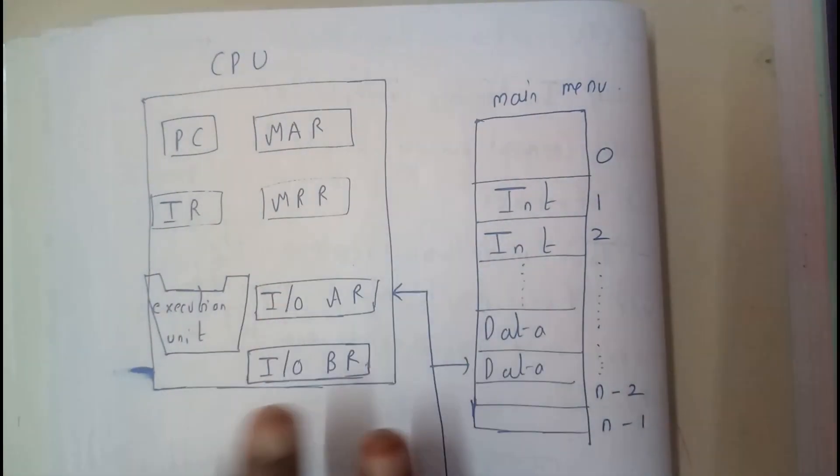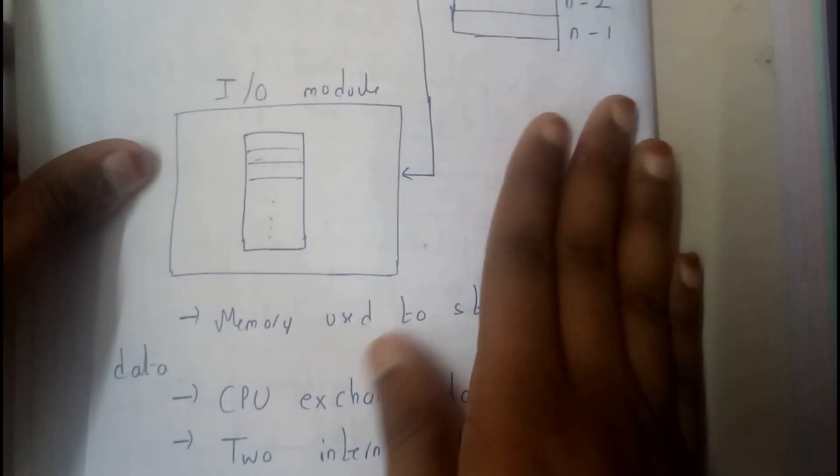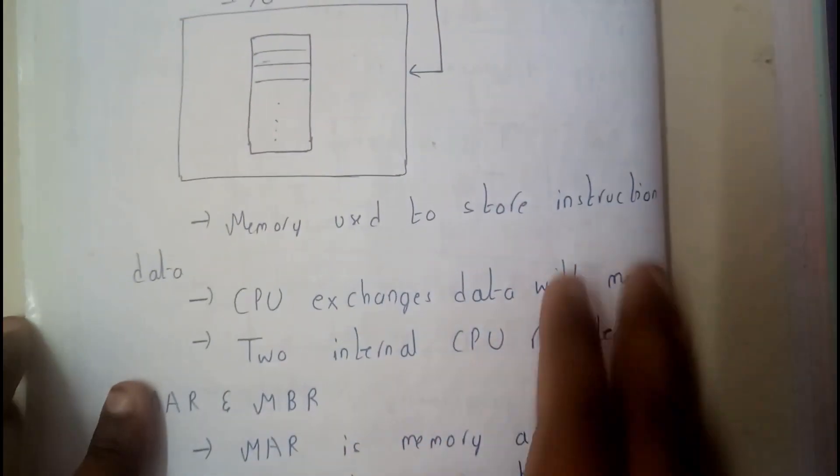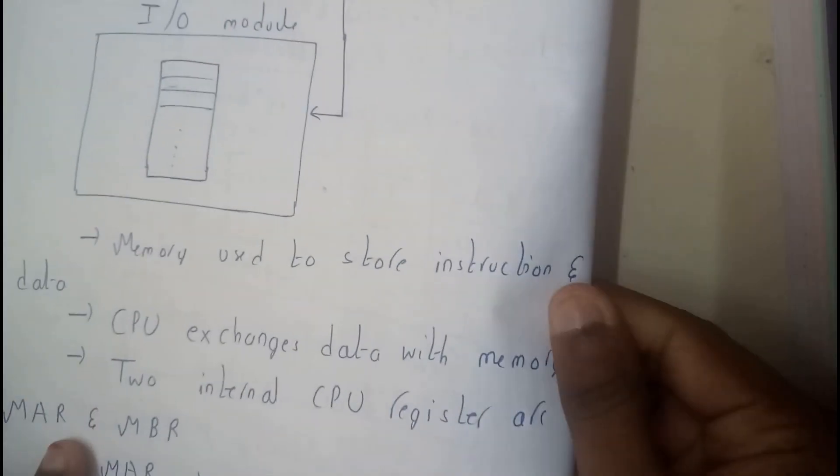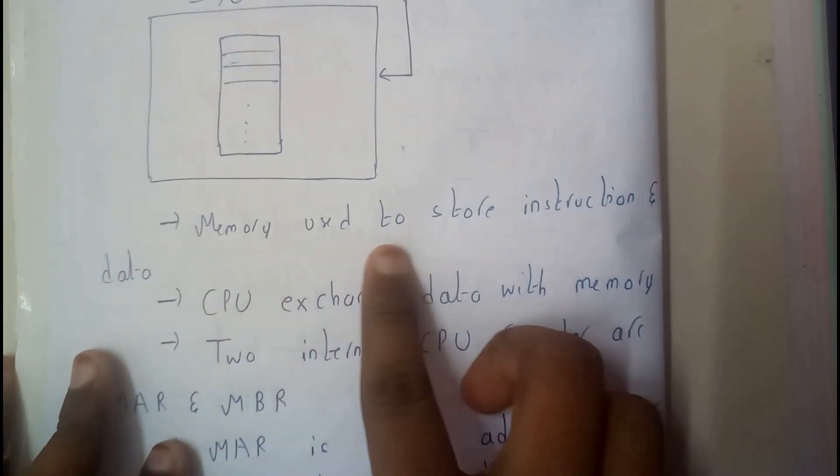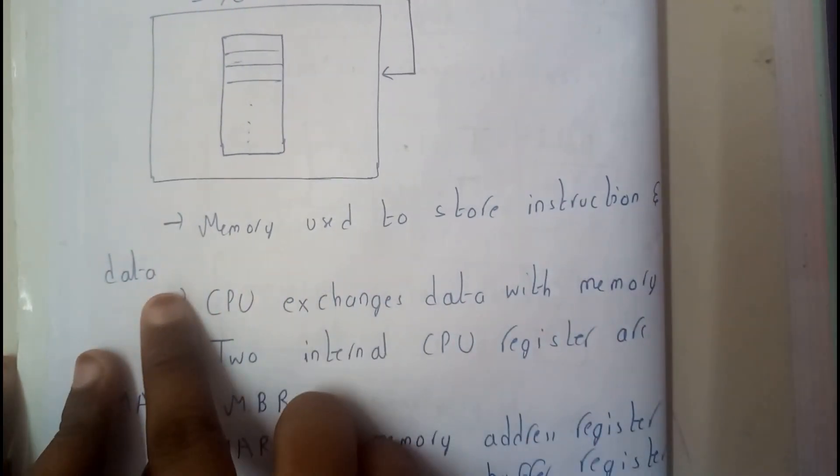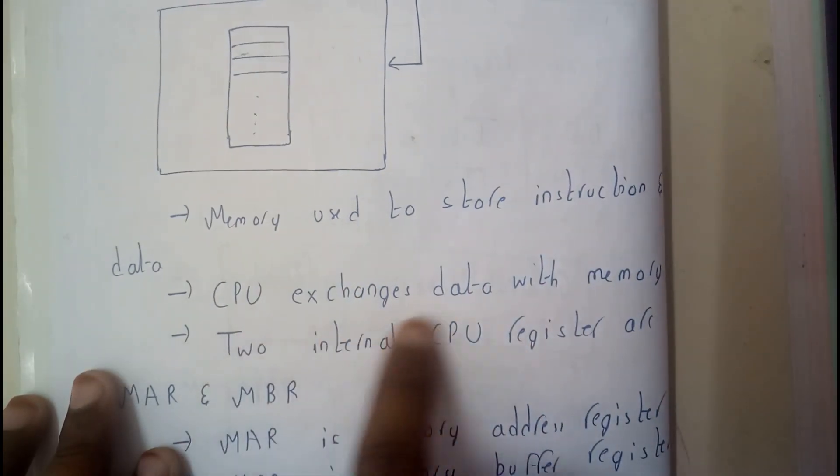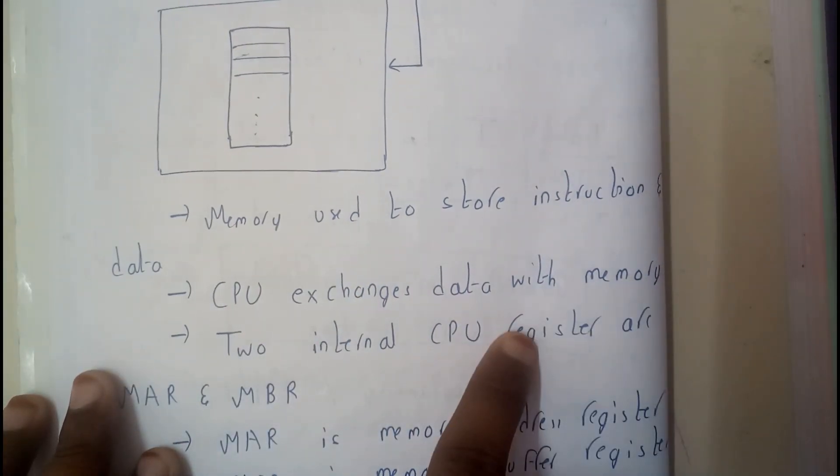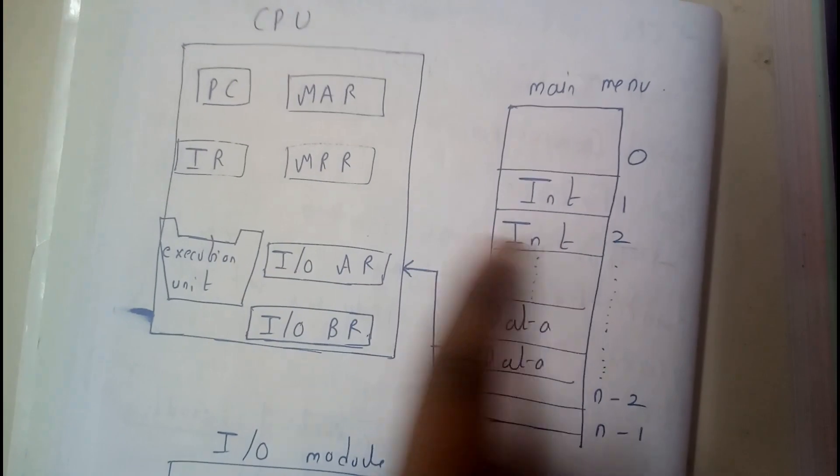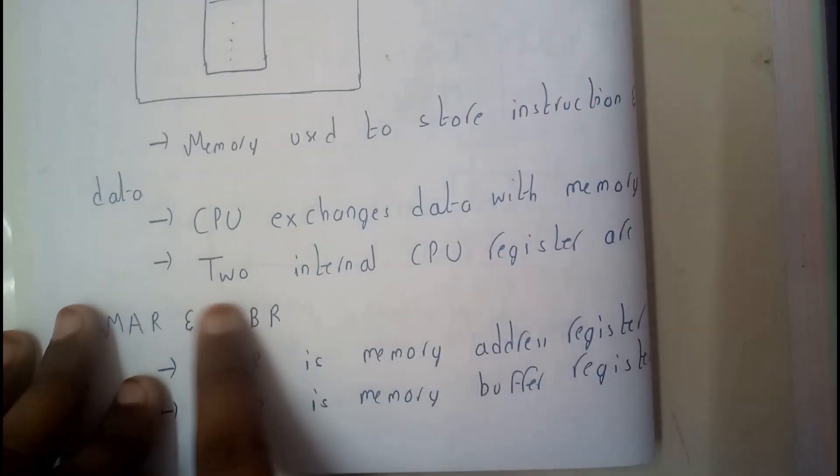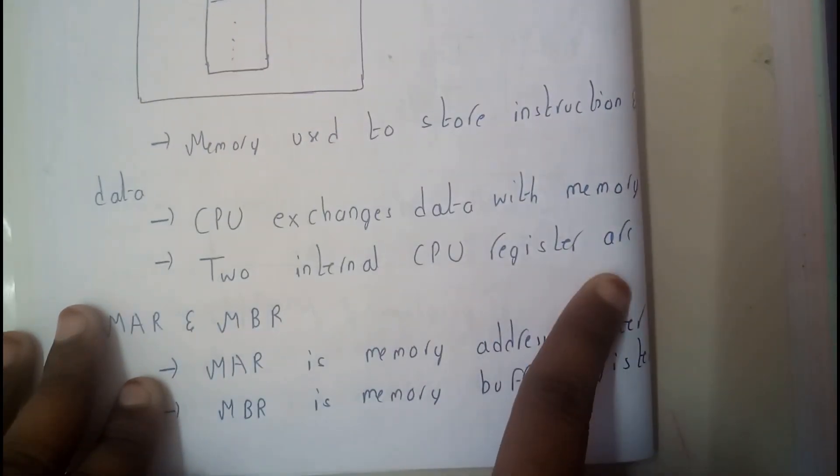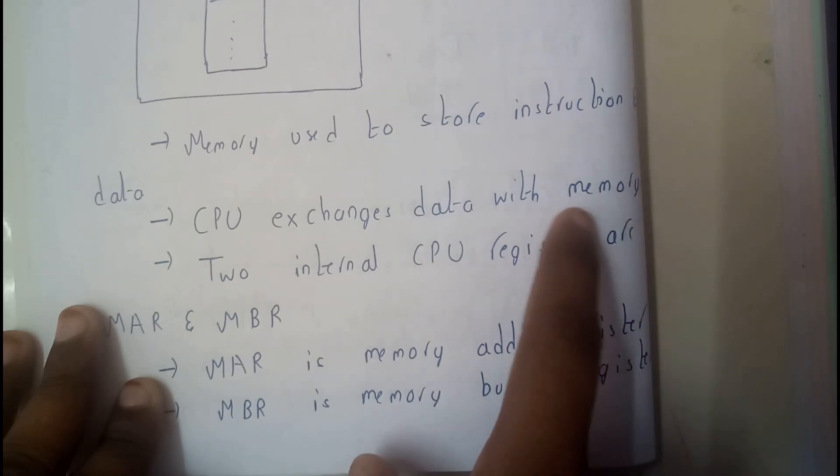We'll be discussing in detail one after the other, don't worry. Now first let us go through memory. Memory is used to store the instructions and data. We use memory to store both instructions and data. CPU exchanges data with memory. CPU will be exchanging data with memory.